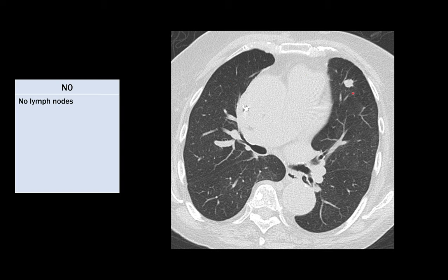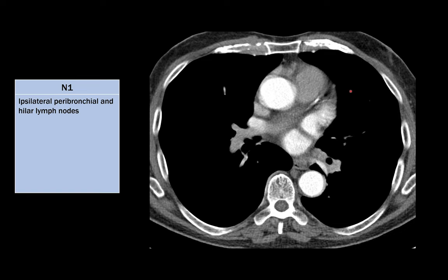N0 means that there are no enlarged lymph nodes, and usually you see this with smaller tumors. N1 is when you have ipsilateral peribronchial and hilar lymph nodes. Hilar nodes are a little bit more central. The peribronchial nodes are just lateral to that, but for the purposes of staging, they're treated the same.